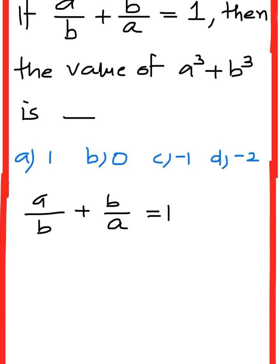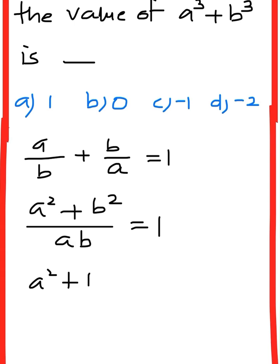That is, a² + b² divided by ab through cross multiplication. a² + b² equals ab times 1, which is ab.